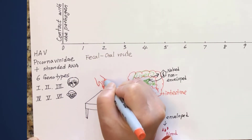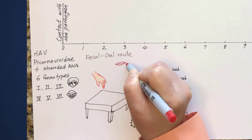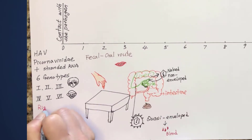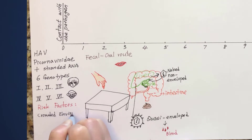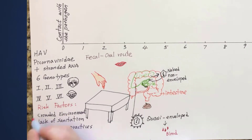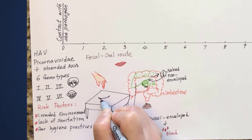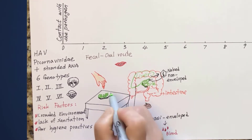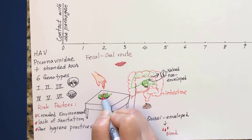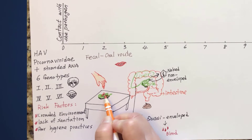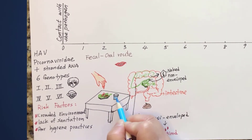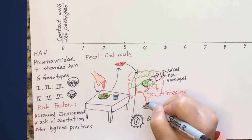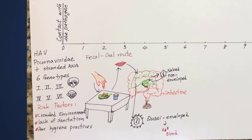Hepatitis A is primarily transmitted via the fecal-oral route through person-to-person contact. Therefore, crowded environments, lack of sanitation, and poor hygiene practices greatly contribute to the spread of this infection. In addition, contamination of food and water remains a major source for outbreaks, endemic, and sporadic infections. Uncooked or undercooked food and infected food handlers are associated with outbreaks of hepatitis A. Transmission through transfusion of blood and blood products is rarely reported.